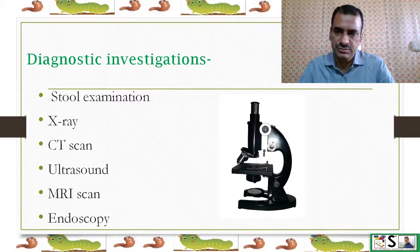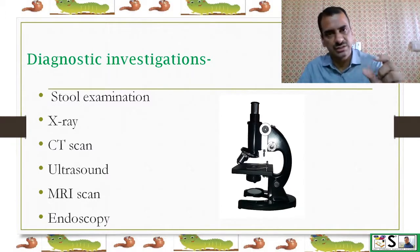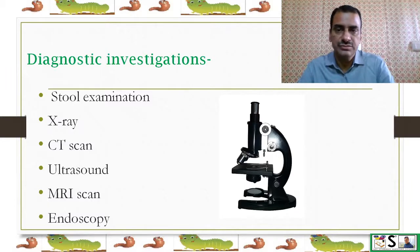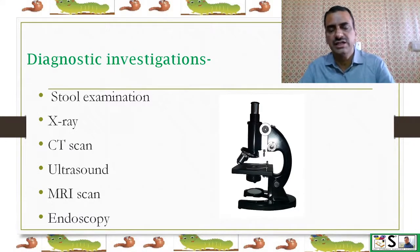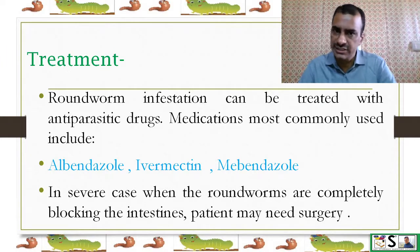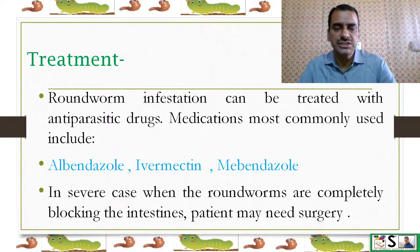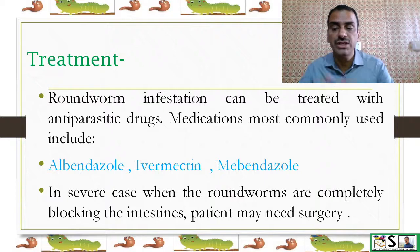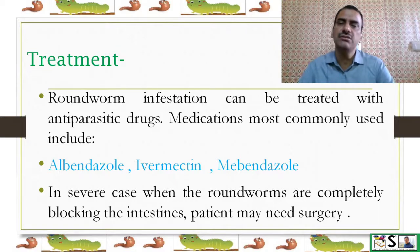How is it diagnosed? Stool examination where worms can be seen, X-rays, CT scan, ultrasound, MRI scan, and endoscopy can all be used to find Ascaris. Treatment: Roundworm infestations can be treated with anti-parasitic drugs. Medications most commonly used are albendazole, ivermectin, and mebendazole. In severe cases when the roundworm completely blocks the intestine, surgery may be required.